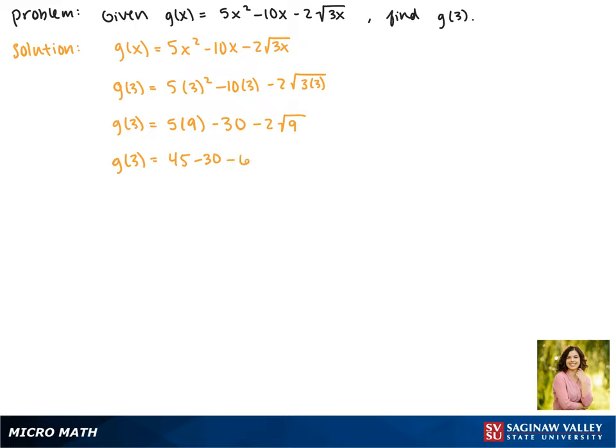So for our last term, we're subtracting 6. And now all we have left is subtraction. 45 minus 30 is 15. Now 15 minus 6 gives us 9.